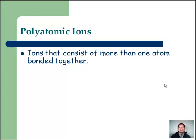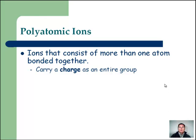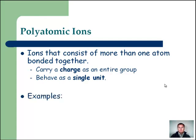We have a bunch of atoms stuck together, but that group of atoms carries a single charge. However many elements are bonded together, they have a charge and they act just like a single ion. They behave as a single group. For example, hydroxide is OH with a minus one charge — oxygen and hydrogen bond together and overall carry a minus one charge.